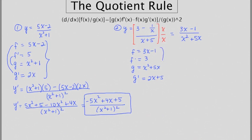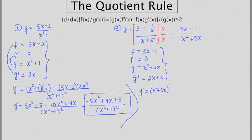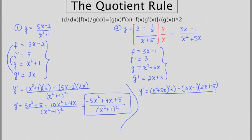These are our puzzle pieces for our derivative. The derivative is going to be the bottom function, x squared plus 5x, times the derivative of the top function, which is 3, minus the top function, which is 3x minus 1, times the derivative of the bottom function, which is 2x plus 5. And this is all going to be over the denominator, x squared plus 5x, squared.